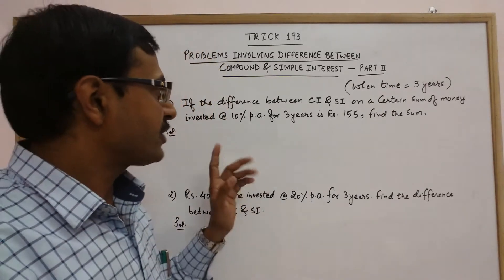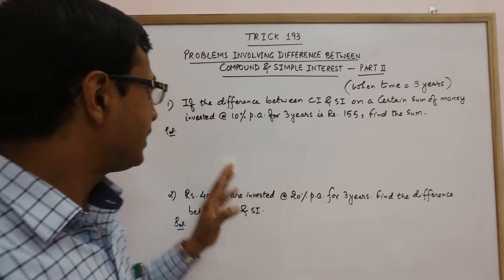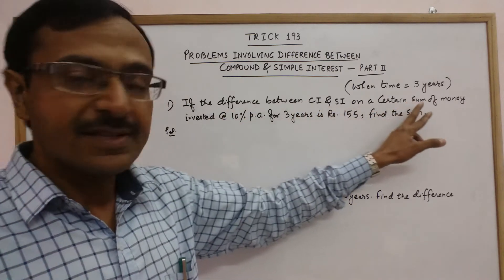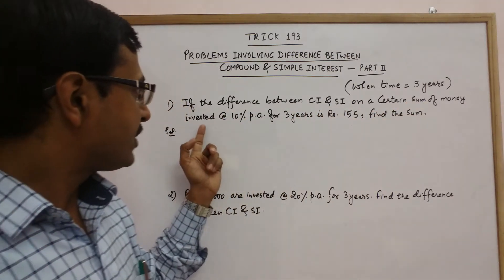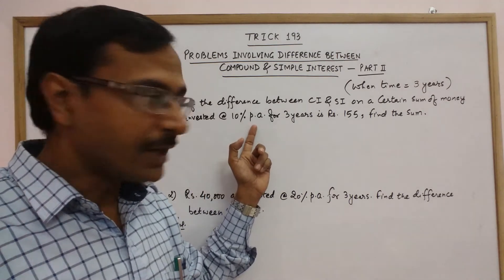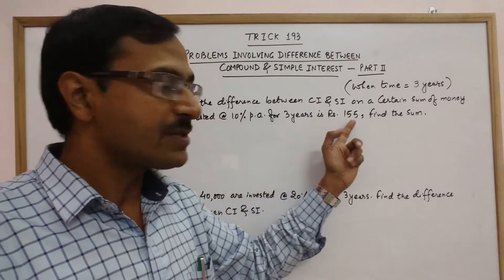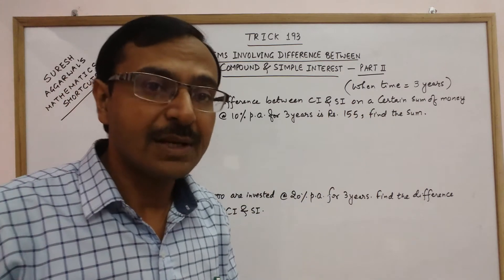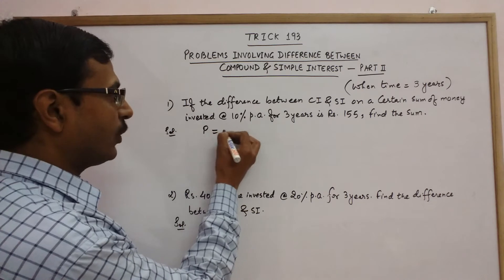The first problem which we are going to take is the difference between CI and SI on a certain sum of money invested at the rate of 10% per annum for 3 years is Rs. 155. Find the sum. So we need to find the sum of the money, the principal amount.